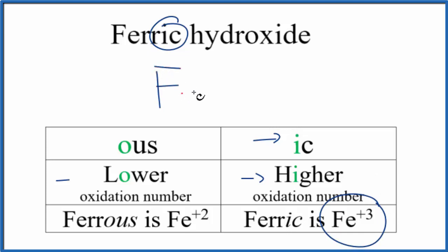So we have Fe+3 and then the hydroxide, this is one you need to memorize, that's the OH and the whole thing has a one minus charge. Its oxidation numbers add up to minus one.